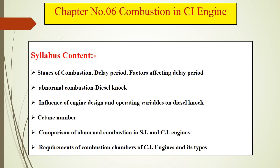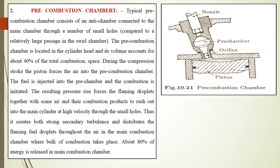In the previous lecture we discussed the swirl chamber, which uses the compression swirl method. In today's lecture we'll see the next type of indirect injection combustion chamber: the pre-combustion chamber. In the pre-combustion chamber, the combustion-induced swirl method is used. A typical pre-combustion chamber consists of an anti-chamber or pre-chamber.